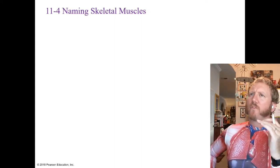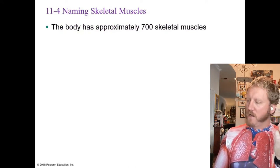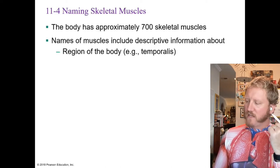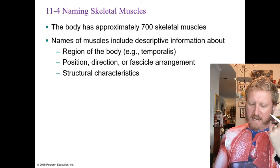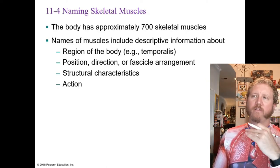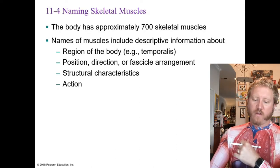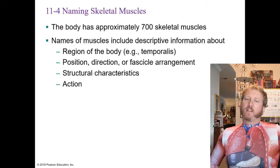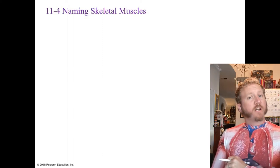Naming muscles sounds complicated at first, but it isn't necessarily so. There are 700 muscles in the human body, and muscle names typically include descriptive information: where in the body you find it, the position, direction, or fascicle arrangement, structural characteristics, and the action. For example, the obliques in your abs are named because of their fascicle arrangement.